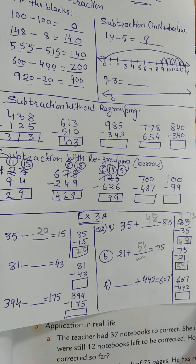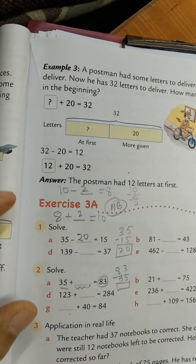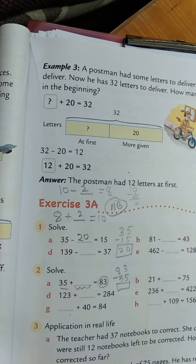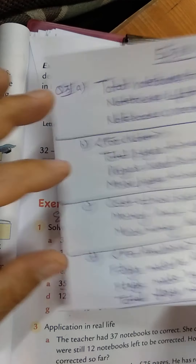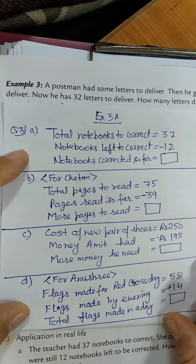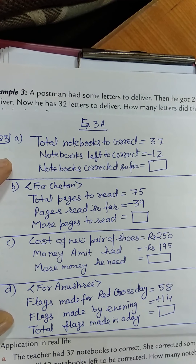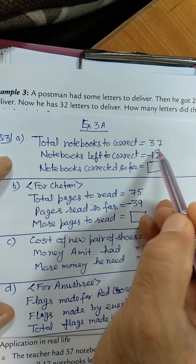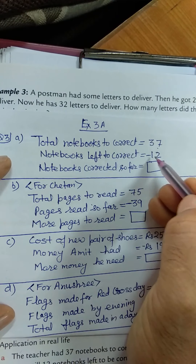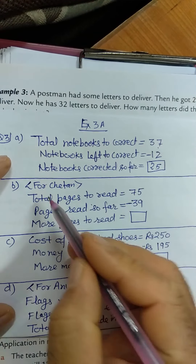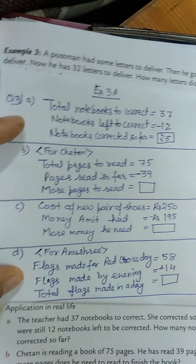Now question number 3 is real-life application. The teacher had 37 notebooks to correct. She corrected some and there are still 12 notebooks left to be corrected. How many notebooks has she corrected so far? Total notebooks to correct: 37; notebooks left: 12; notebooks corrected so far: 37 minus 12 equals 25.